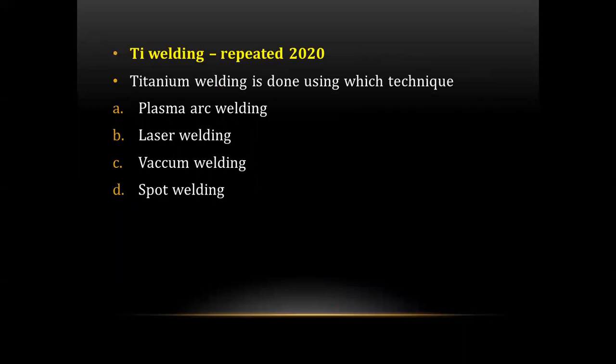The next question was a repeated question that also appeared in NEET MDS 2020 with the exact same question and options. The question was: titanium welding is done by using which technique? The options were plasma arc welding, laser welding, vacuum welding, and spot welding. The correct answer was laser welding.